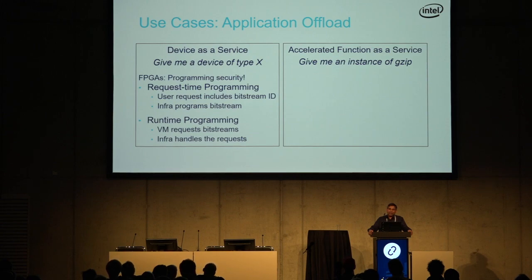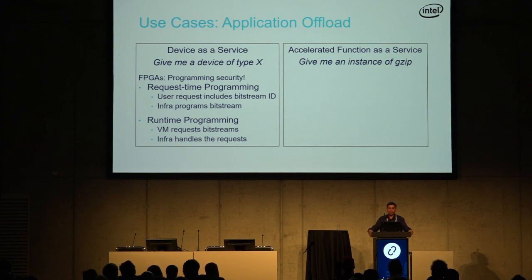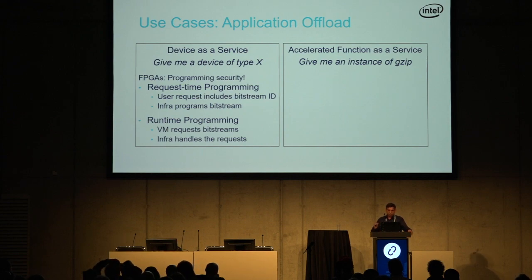The other broad way a user could consume a device is via its functions. If you're a user, you really don't care about what GPU model it is or whether it's an Arria 10 with a particular bitstream — you really want to offload gzip, or IPsec. In this second model, give me this algorithm or function; I don't care where it is. It's a higher level of abstraction, and we expect this to appeal to a wider audience compared to the first model, which is really for power users.